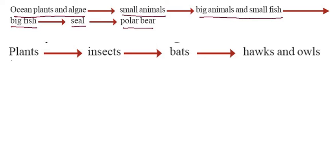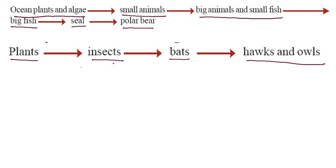As you can see here, plants are eaten by insects, insects are eaten by bats, and bats are eaten by hawks and owls. This is the food chain. Both food chains together, and a number of food chains, make a food web.